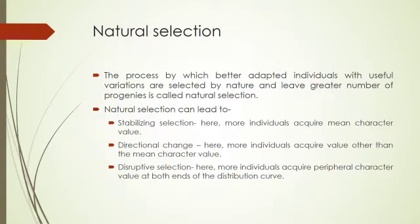Natural selection is the process by which better adapted individuals with useful variations are selected by nature and leave a greater number of progeny. Natural selection can lead to three types: stabilizing selection, directional selection, and disruptive selection. In stabilizing selection, individuals acquire the mean character value. In directional selection, more individuals acquire a value other than the mean character value. In disruptive selection, more individuals acquire peripheral character values at both ends of the distribution curve.